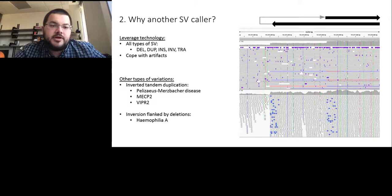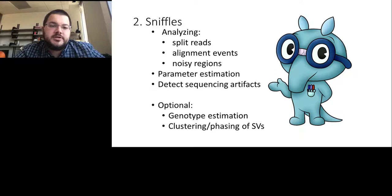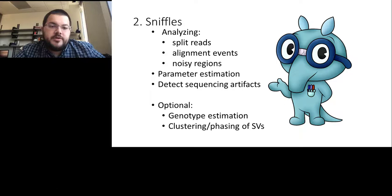Briefly, Sniffles analyzes split reads, alignment events, and noisy regions — signals like we saw from BWA-MEM in the first slides. It does parameter estimation to automatically adapt itself to PacBio data as well as Nanopore data. It can detect sequencing artifacts and correct for them. Optionally, it provides genotyping estimation and clustering or phasing of structural variants if they are close together.